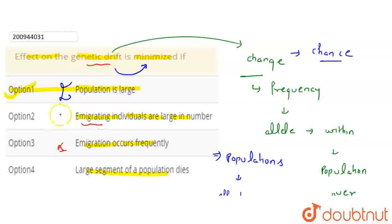The second option is large number of population dies, so the population will be lower, so the effect will be more. So the correct option will be the first: the population is large, so the effect of genetic drift will be less.